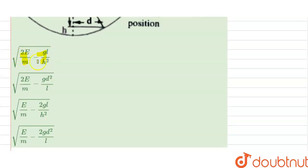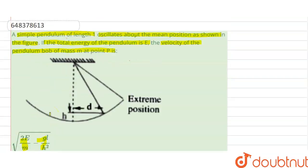The options are: (A) root over of 2E/m minus gl/h square by l, (B) root over of E/m, (C) root over of 2gl divided by d square, and (D) root over of E/m minus 2g·d²/l.